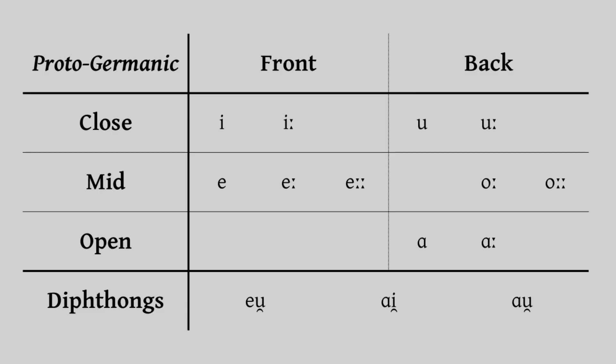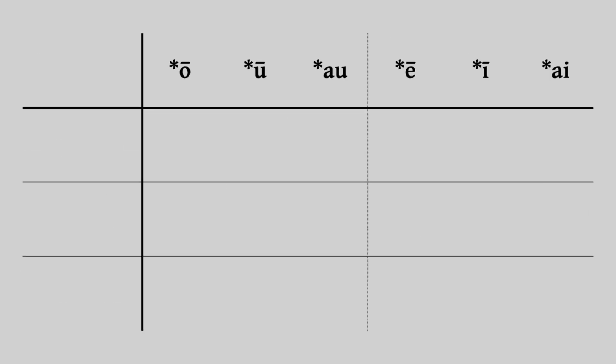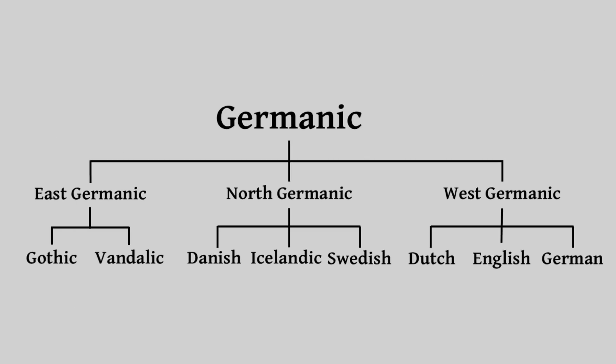Exploring the entire history of this system across all Germanic languages would be interesting, but would take far too long. So for this video, let's just focus on six vowels in the three most spoken Germanic languages: English, German, and Dutch.